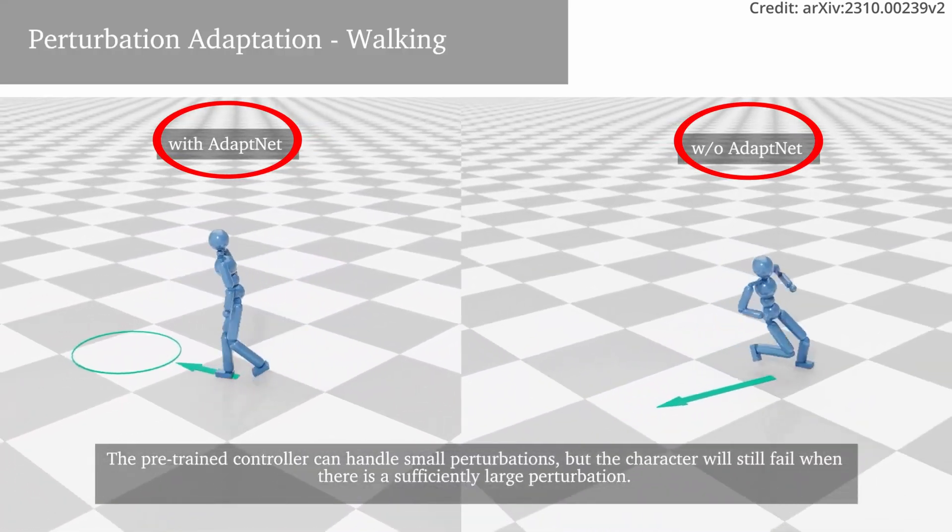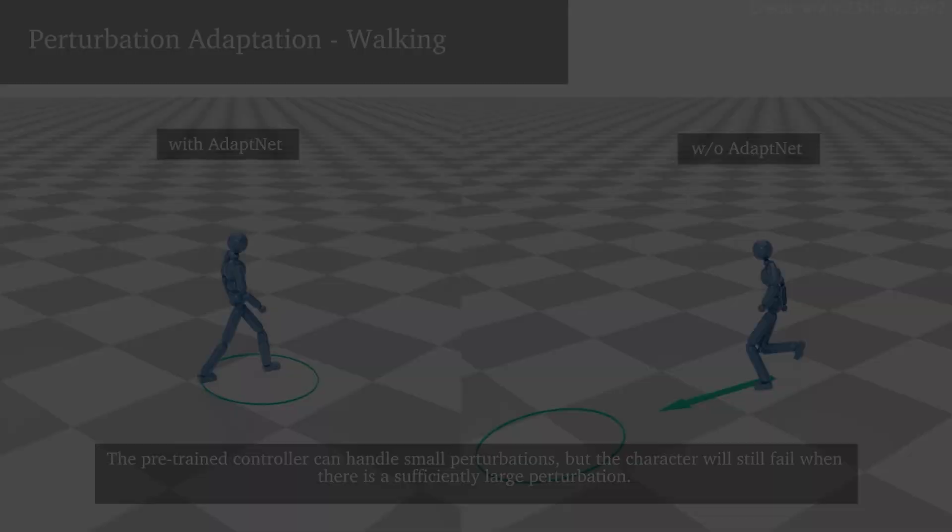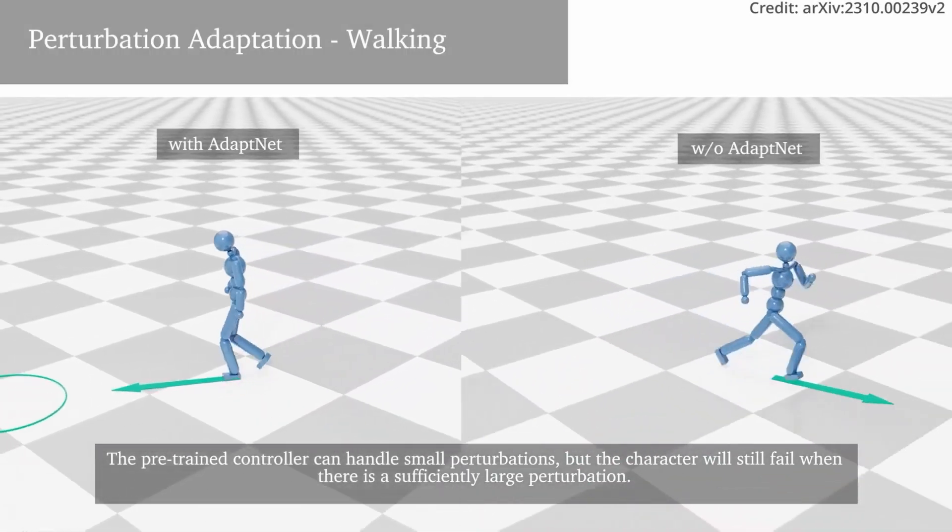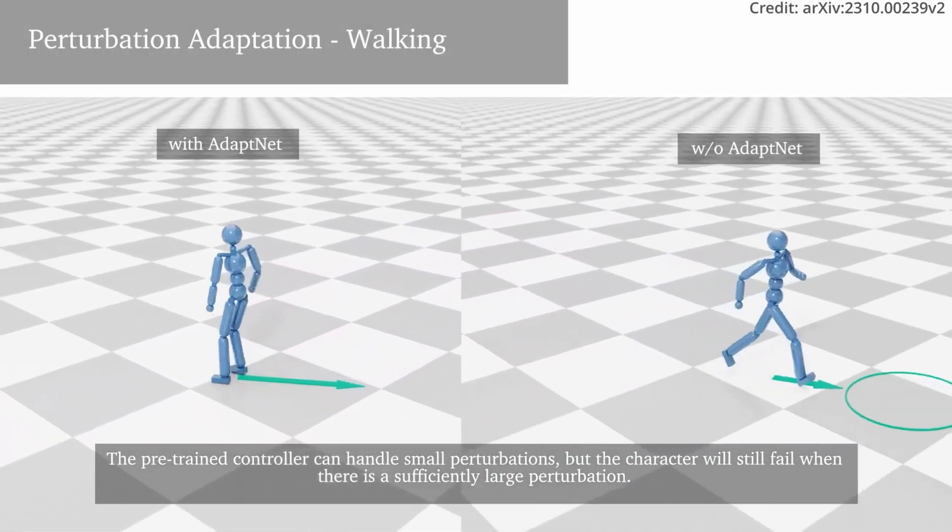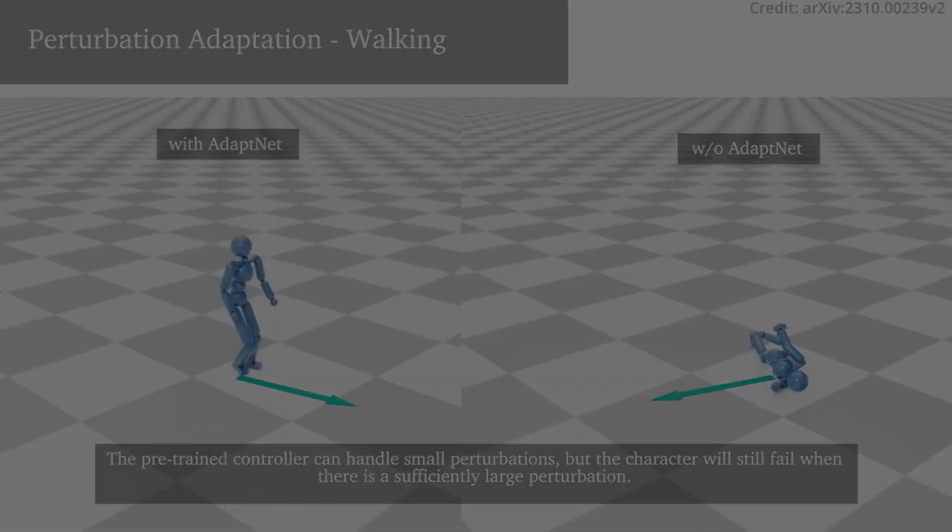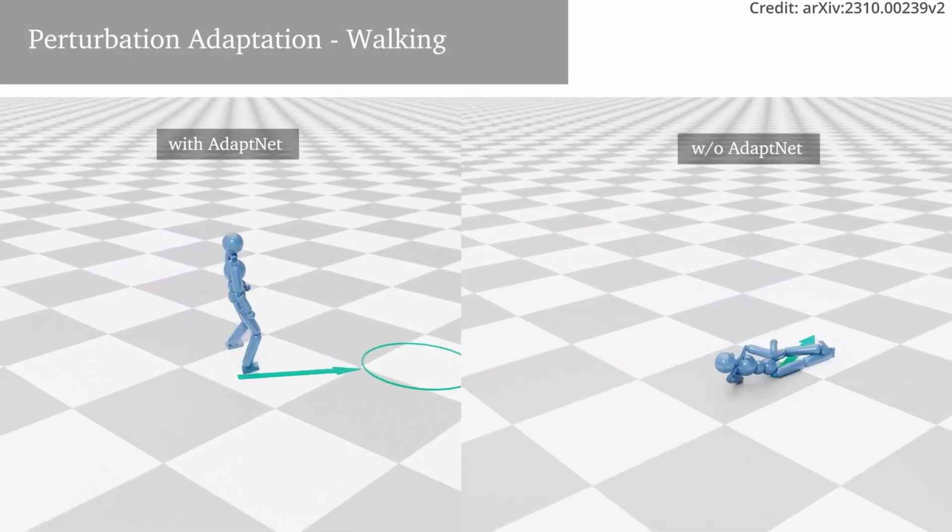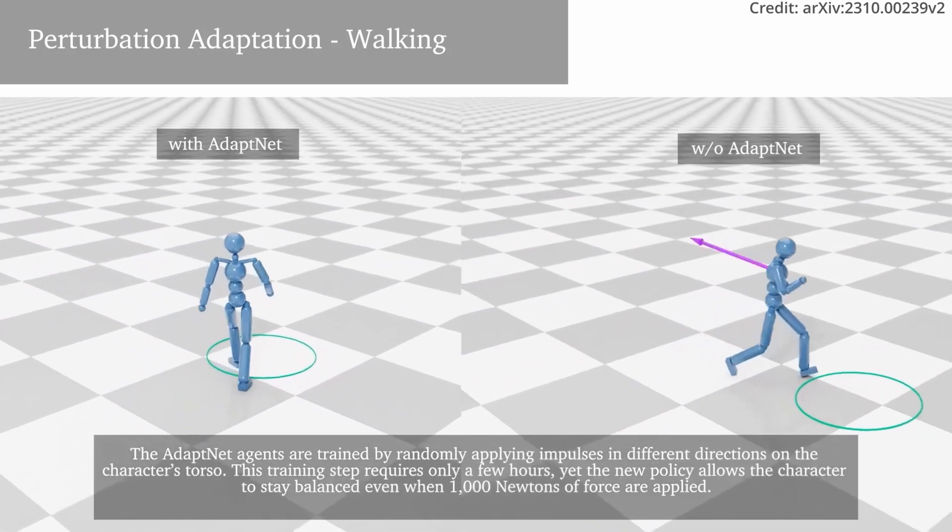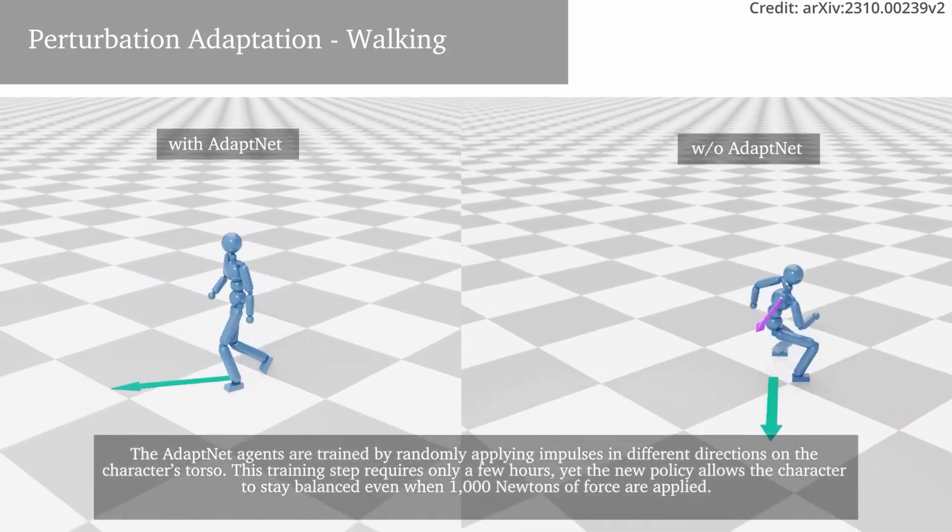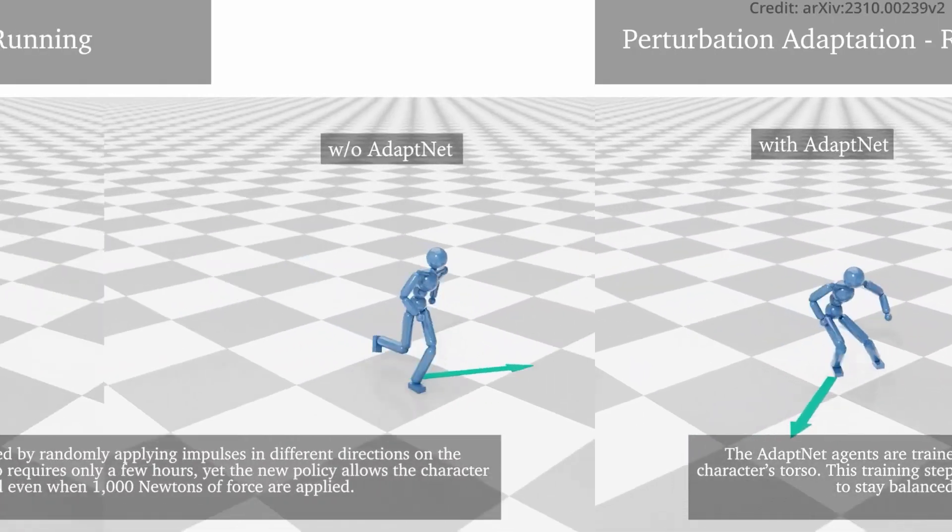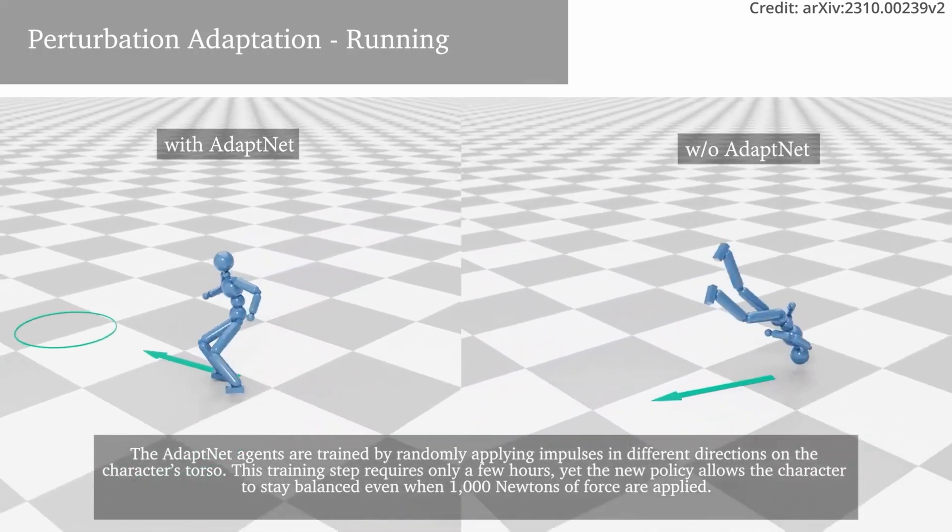AdaptNet goes a step further by enhancing the robustness of walking and running controllers. Through training that involves randomly applying impulses in different directions on the character's torso, the new policy allows the character to maintain balance even under substantial perturbations, ensuring stability and control despite being put into purposefully difficult circumstances.